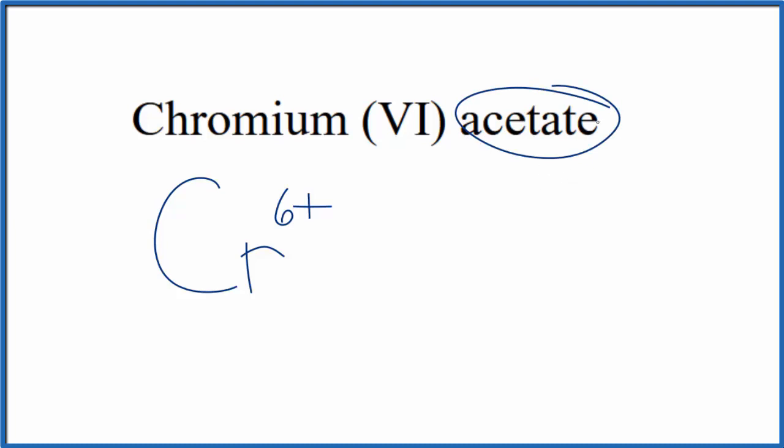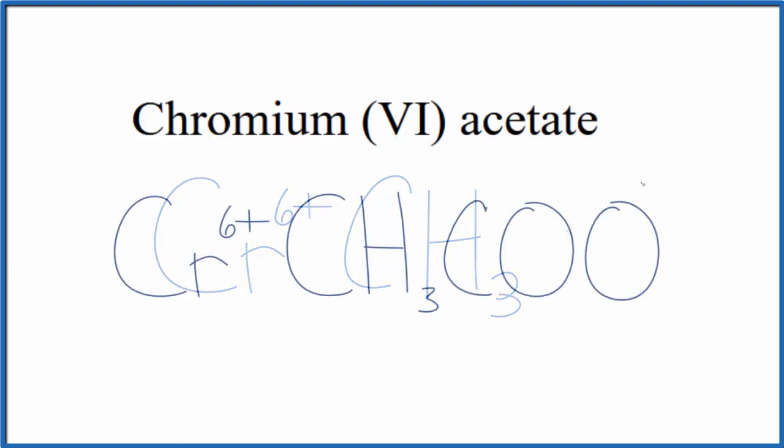Acetate, you won't find that on the periodic table. That ends in -ate, so this is a polyatomic ion. Either you memorize that the acetate ion is CH3COO with a charge of 1-, or, if you're allowed, you look it up on a table of polyatomic ions.